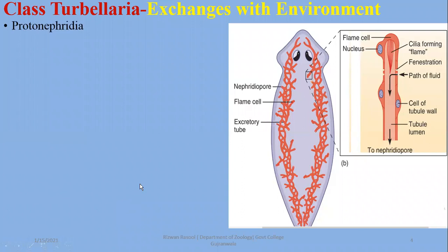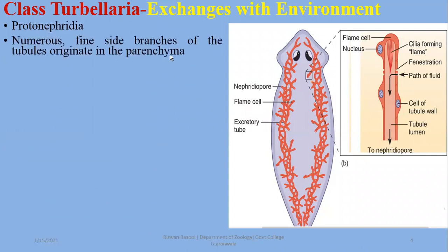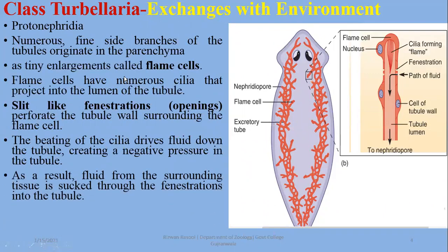With protonephridia, or the flame cell system, which you have already studied — this is called a primitive type excretory system, the first type of kidney. As you can see on the right side diagram, there are multiple fine side branches of tubules that originate in the parenchyma. With tiny enlargements shown in the projection, they are known as flame cells. Their structure is such that they have multiple cilia modes, and when they move, they look like a flickering flame — that is why these cells are named flame cells.